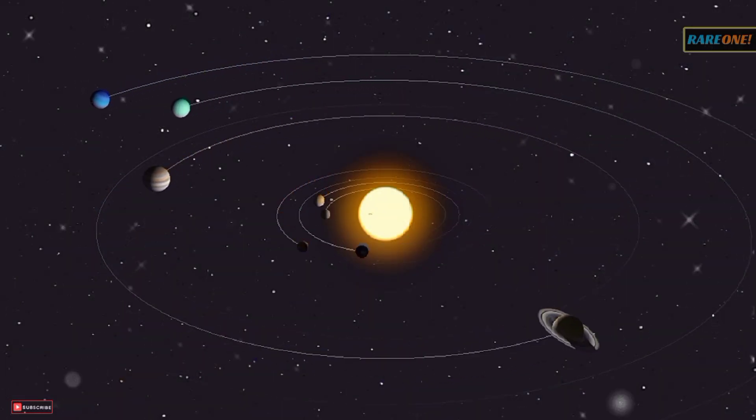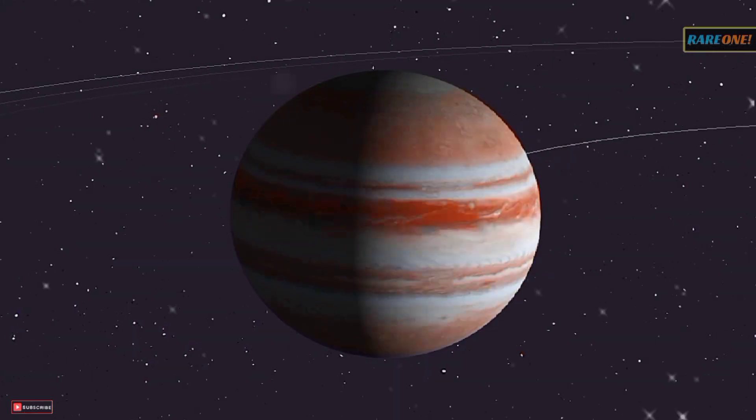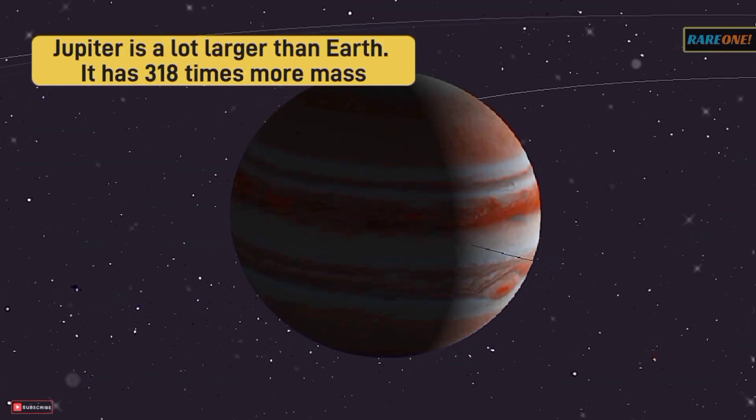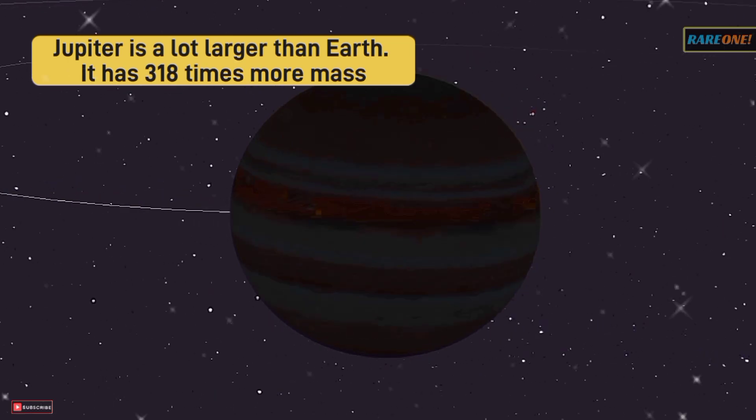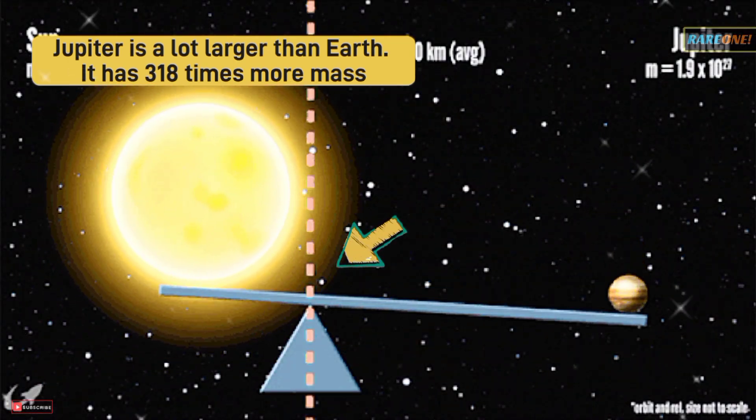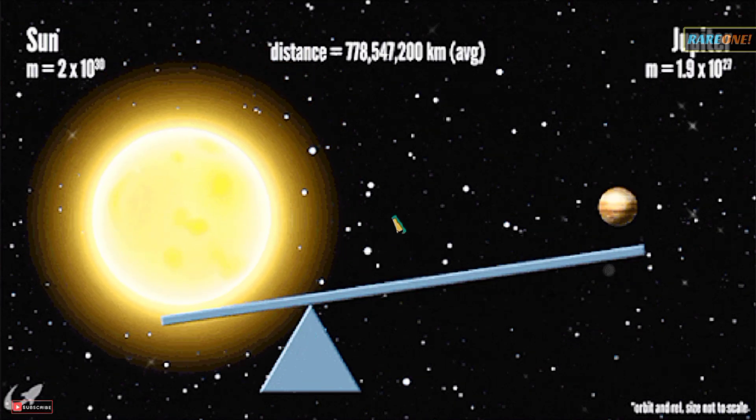Let's take a tour of our solar system to see barycenters in action. Jupiter, the giant of our solar system, plays a significant role. With its massive size, the barycenter between Jupiter and the Sun isn't smack dab in the middle of the Sun. It's actually just outside its surface.